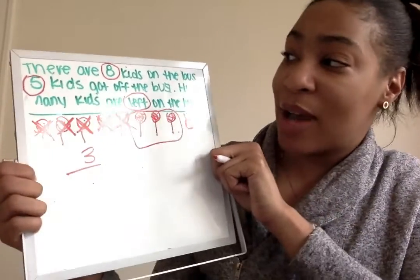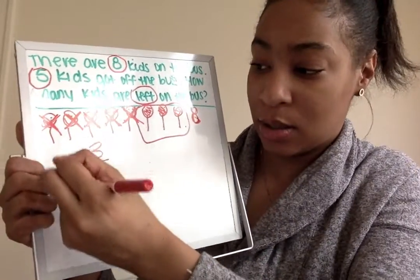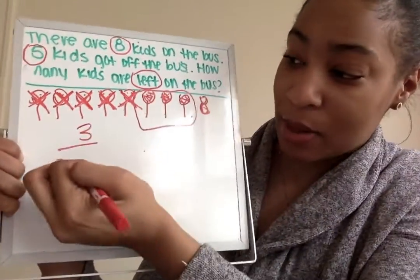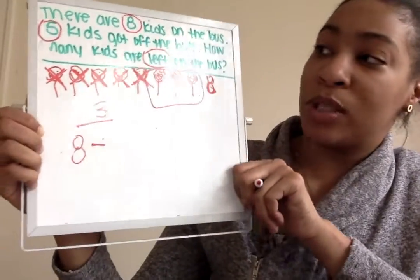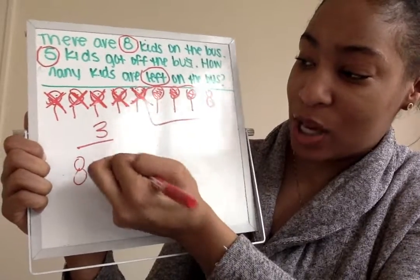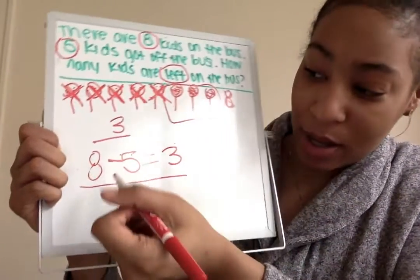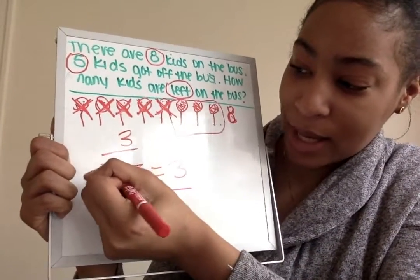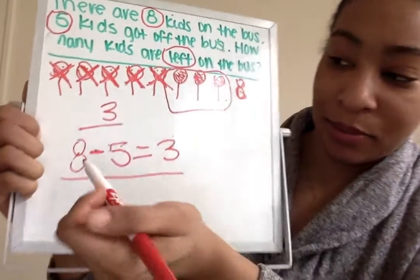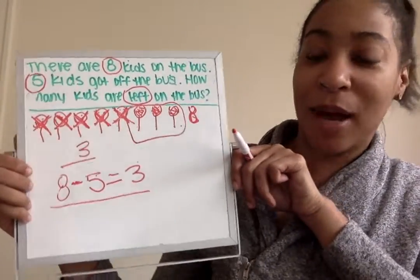So now let's do our number sentence together. We know we're going to start with eight. And then since we crossed off five kids, we know that we're doing subtraction. We subtracted five kids, so we're going to put minus five, which equals three. Now let's read our number sentence together: eight minus five equals three. Can you all say it? Eight minus five equals three.